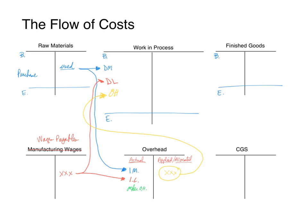Let's finish up work in process. We've got our beginning inventory and our three product costs: direct materials, direct labor, and overhead. Whatever we complete this period is called cost of goods manufactured, and that moves into finished goods. It sits there until the product is sold. Once we sell a wooden chair, for example, we expense it. These inventory accounts represent only cost — nothing to do with revenues. Our cost of goods sold T-account also goes up by that cost of goods sold amount.